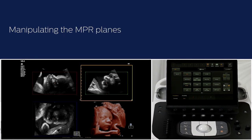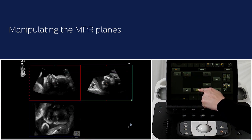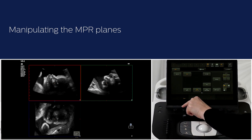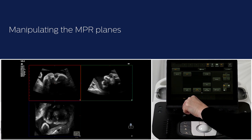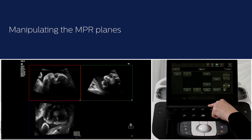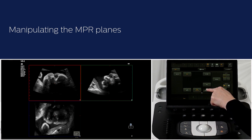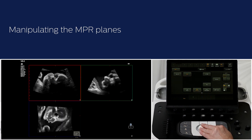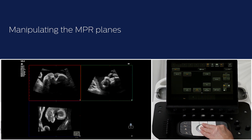Let's take a look at how we can manipulate the NPR planes. If needed, we can hide the volume image by pressing hide volume on the touch screen. To find an area of interest, you can slice through a specific plane by selecting the plane on the touch screen and turning the slice rotary knob, or turn the X, Y and Z knobs to rotate a specific plane. At any time you can press reset orientation to return to the original orientation. To see the area of interest in all three NPR planes, move the reference cursor with the trackball to the area of interest. Here we can now see the eye in all three planes.